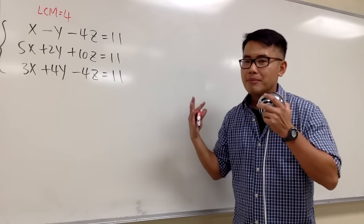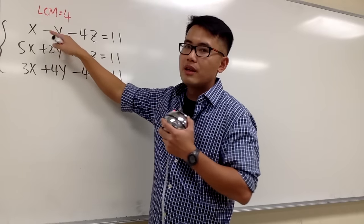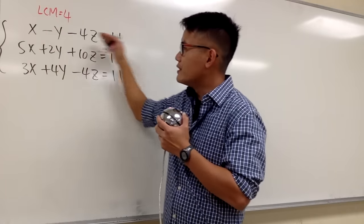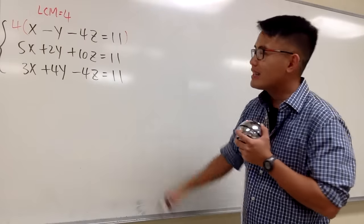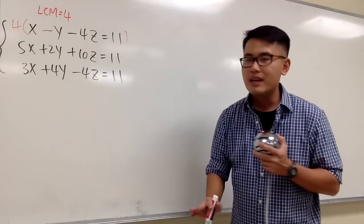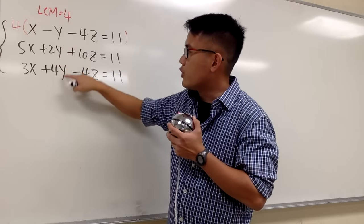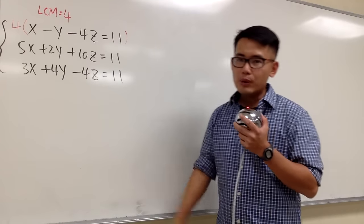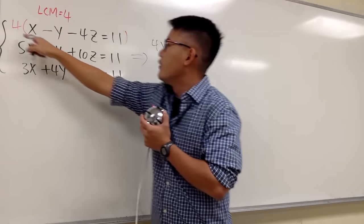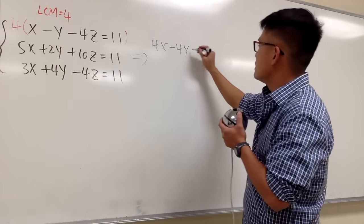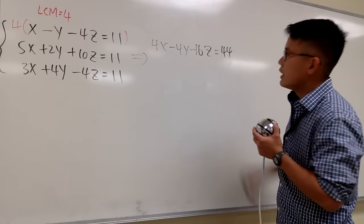You just have to use the lowest common multiple mentioned earlier. Now let's make things happen. Right here we have a negative 1 — times what will give us 4? Let me multiply the first equation by 4. So I will take this and multiply everything by 4. This is going to give us 4 times x, which is 4x, and then 4 times negative y, that's negative 4y, and then 4 times negative 4, that's negative 16z. And don't forget 4 times 11 gives us 44.